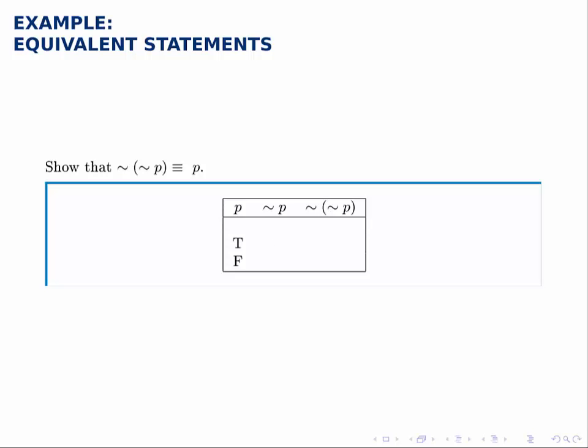So here we'll get to not not P by first building not P and then not not P. Again, notice that we only have one simple statement P, so we only need two rows where it's either true or false.